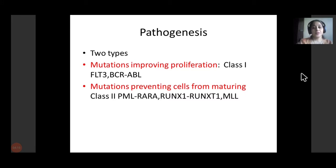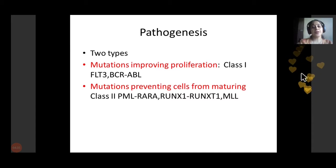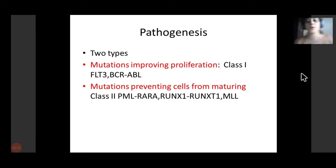When we talk about pathogenesis, there are two types of mutations classified as Class 1 and Class 2. Class 1 mutations involve hyperproliferation of tumor cells and are FLT3 and BCR-ABL gene associated, giving a very poor prognosis. Class 2 mutations prevent cells from maturing — the prime example is PML-RARA-induced acute promyelocytic leukemia where maturation arrest occurs. RUNX1 and MLL-associated leukemias have intermediate to poor prognosis.